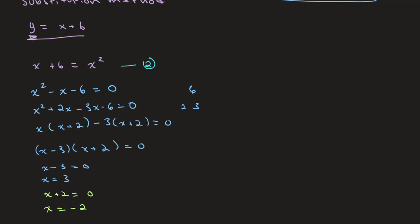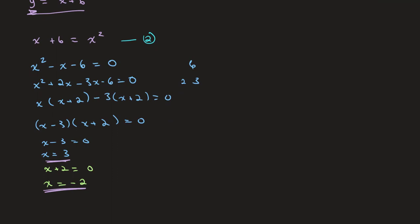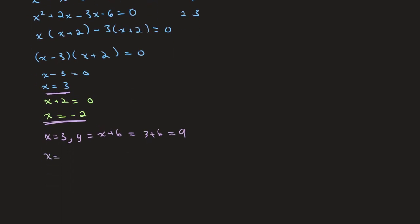We have our two values of x. Now our next step is to solve for our values of y. When x is equal to 3, y is equal to x plus 6, which gives us 3 plus 6, equal to 9. And when x is equal to negative 2, y is equal to negative 2 plus 6, which is 4. So our final answer is x equals 3, y equals 9, or x equals negative 2 and y equals 4.